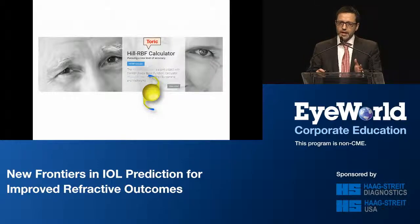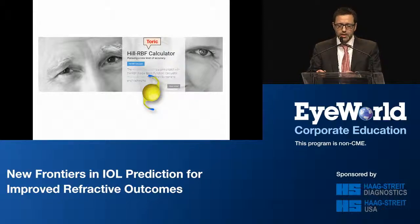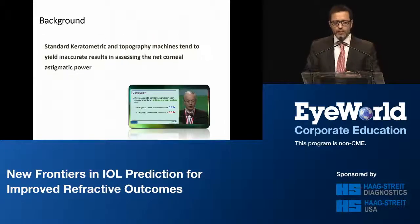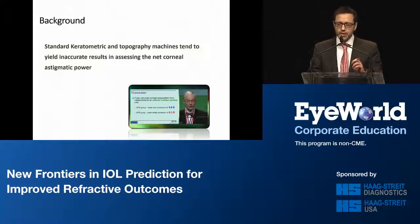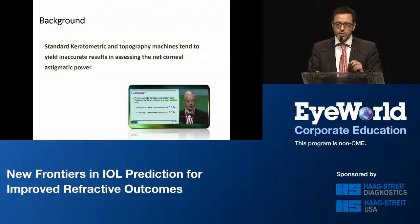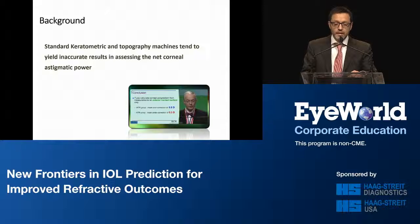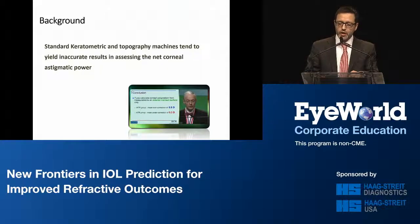Toric IOLs are a great solution for patients with pre-existing corneal astigmatism. However, the results following implantation are not always predictable, and one of the main reasons for that is that standard keratometry and topography machines tend to yield inaccurate results in assessing the net corneal astigmatic power. They measure the anterior cornea but assume that the relationship between the anterior and posterior corneal surfaces is constant, which is not always true. It has now been five years since Doug Koch reminded us at the ASCRS meeting about the role of the posterior cornea in toric calculations.